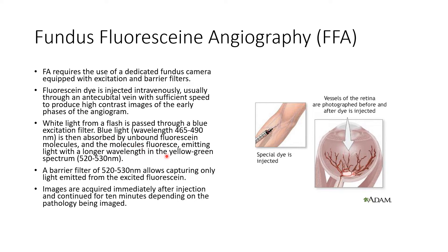The blue excitation filter has a wavelength of approximately 465 to 490 nanometers. When this blue light is absorbed by unbound fluorescein, the dye changes its wavelength and emits a green fluorescence at a longer wavelength in the yellow-to-green spectrum, approximately 520 to 530 nanometers. This green fluorescence is seen whenever white light with this filter is used, corresponding to the cobalt blue filter seen on slit lamps and ophthalmoscopes.